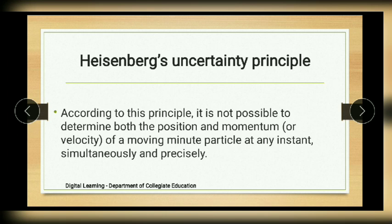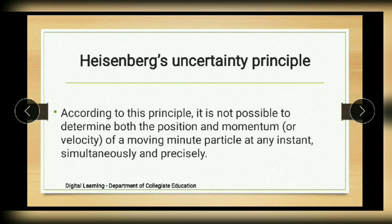The next concept is Heisenberg's uncertainty principle. According to this principle, it is not possible to determine both the position and momentum or velocity of a moving minute particle at any instant simultaneously and precisely. When a photon of radiation collides with an electron to determine its position, both its position and momentum will be disturbed since the mass of the electron is very small. So simultaneous accurate measurement of position and momentum is not possible.